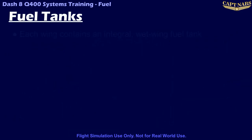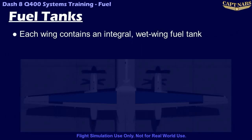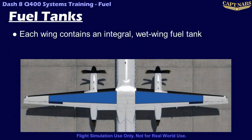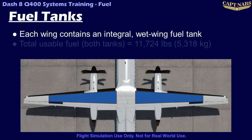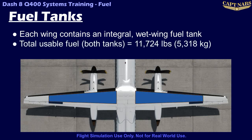Fuel for the Q400 is carried in two integral wing tanks, one in each wing. The wing tanks are located between the fore and aft spar in each wing, and extend from the fuselage to the wing rib just inboard of the aileron. The combined usable fuel capacity of both fuel tanks is 11,724 pounds, or 5,318 kilograms.